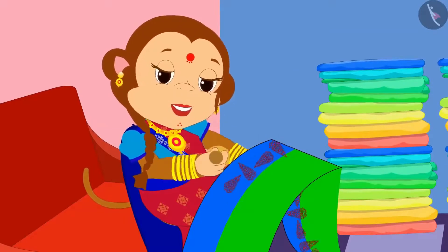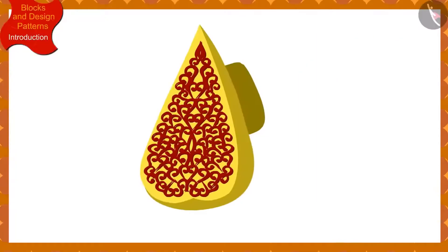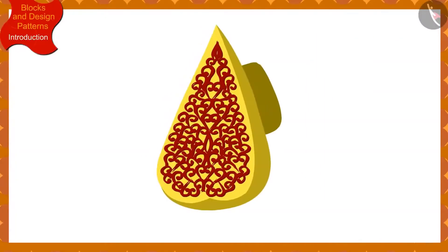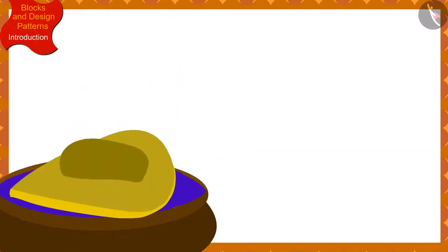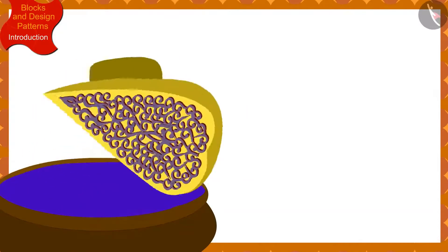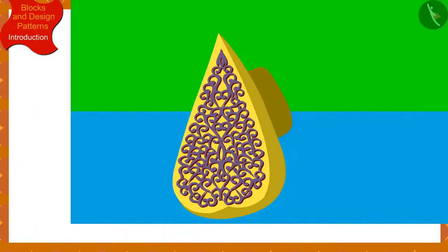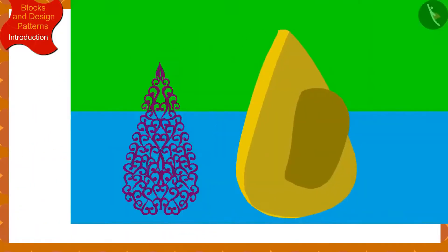Banno has a block of this design. She first dipped her block in a box of color and made an impression on the sari using her block in this way.